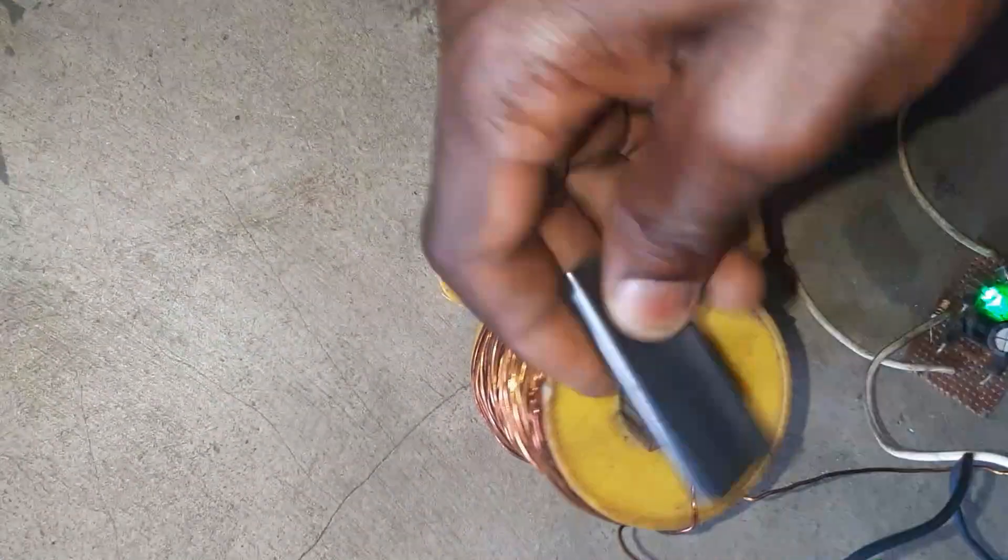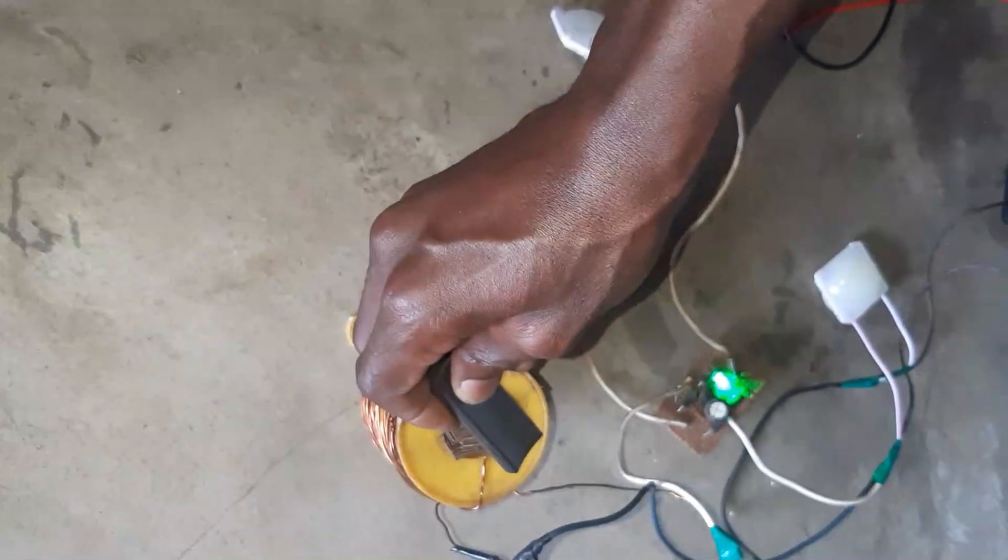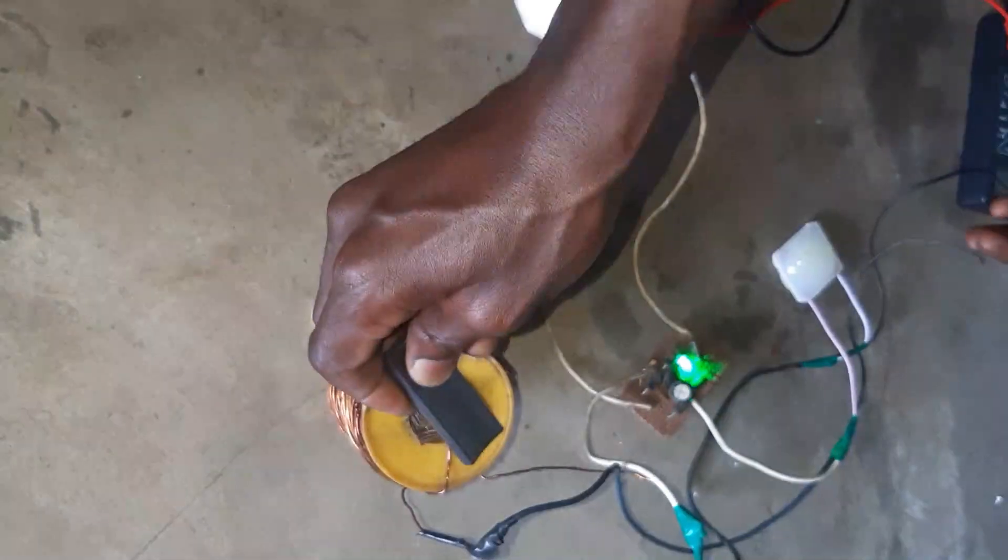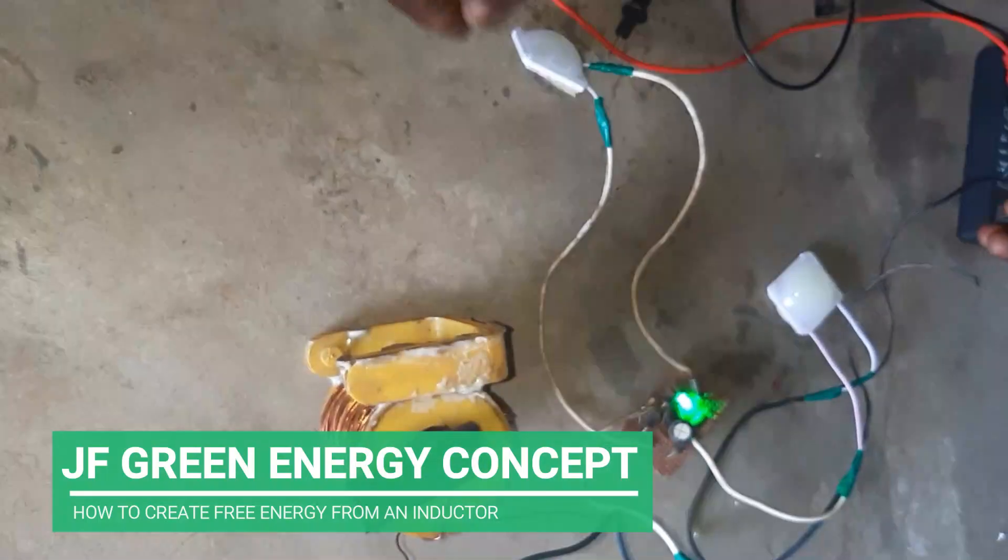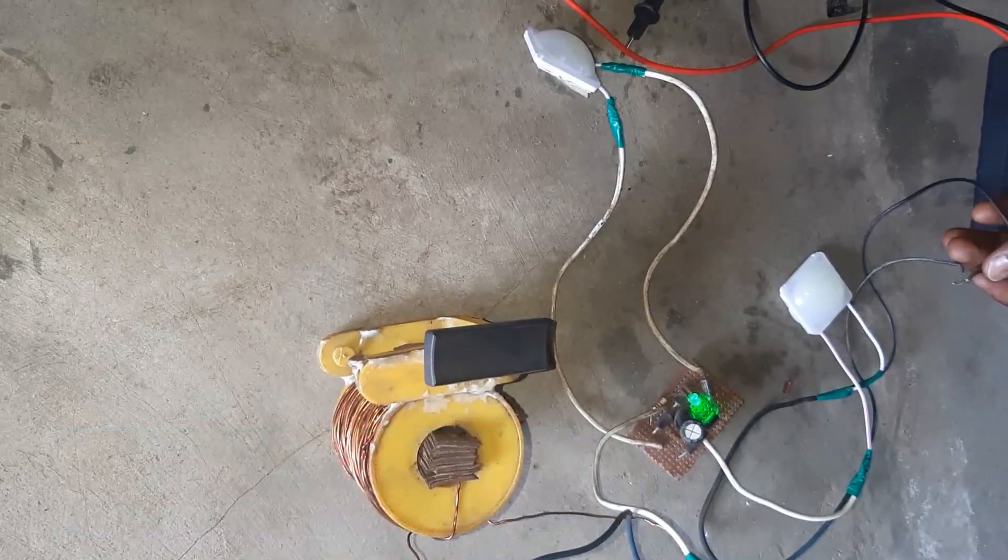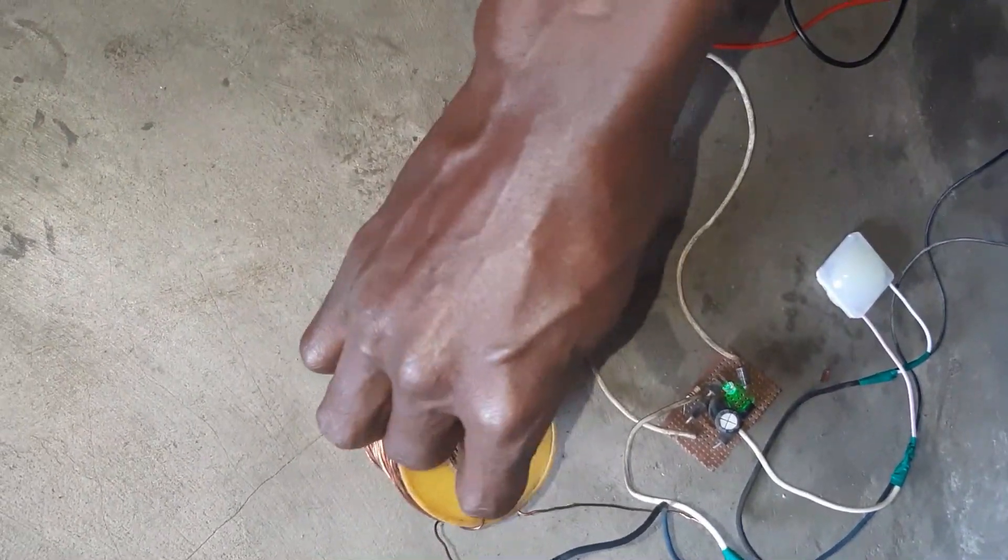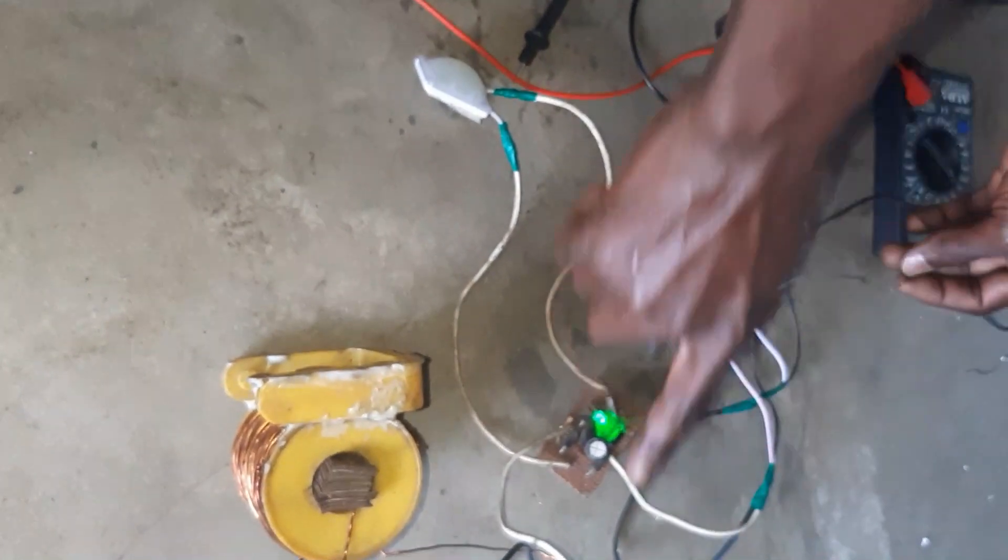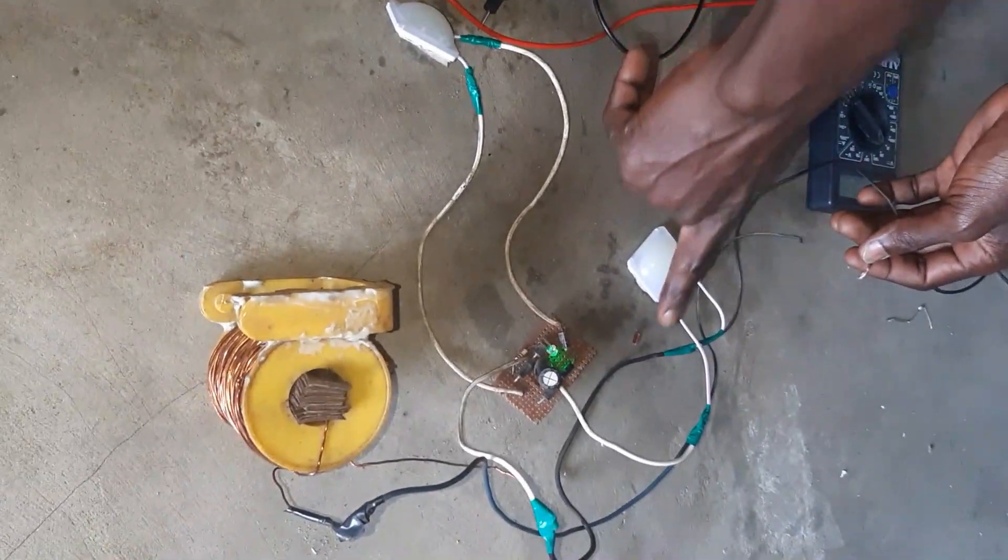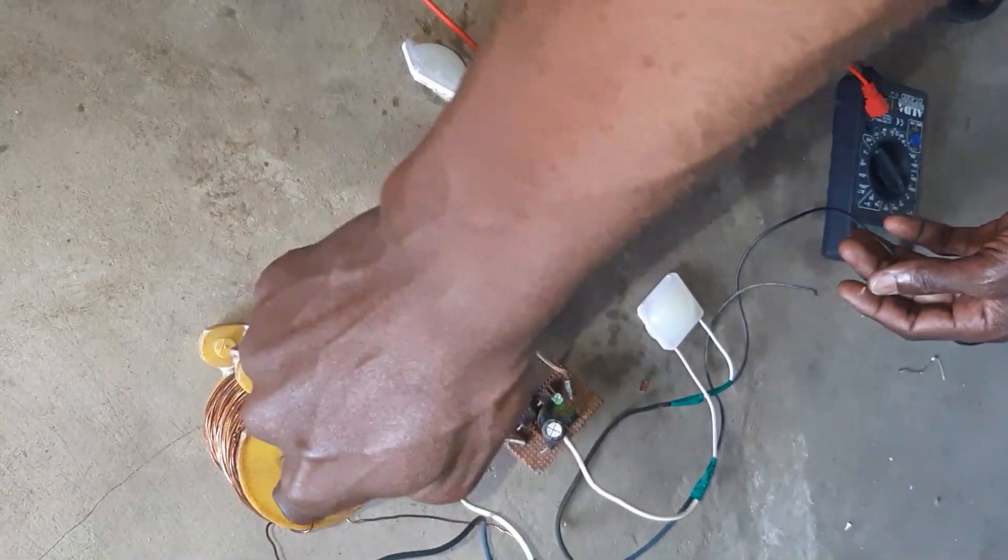Now let's introduce a magnet to this. Because when we talk about electromagnetic induction, you can now see the effect. Now you see the thing is attracting the magnet. You can see the magnet is being attracted. Now let's see the reverse state.